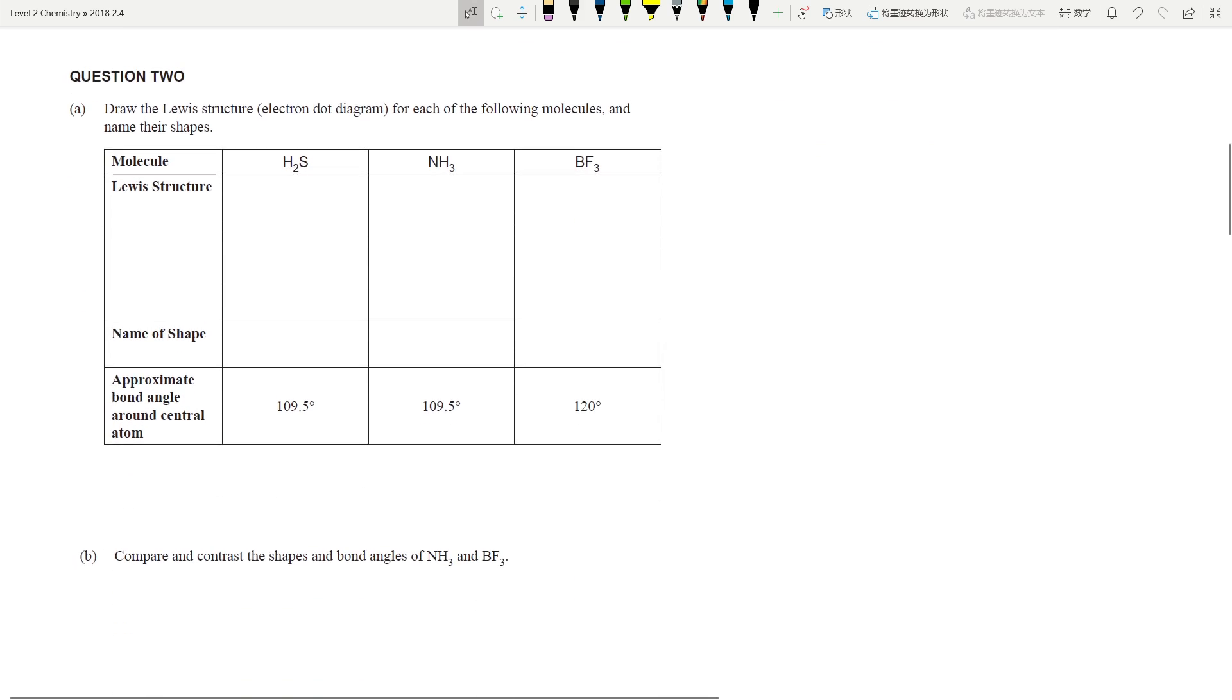Now question 2, the first question looks at Lewis diagrams. So H2S is just going to look like this - H2S with two sets of electrons like that. This is a bent shape and NH3 is again three single bonds and this is a trigonal pyramidal or trigonal pyramid.